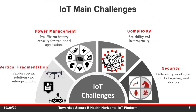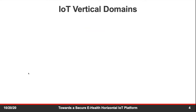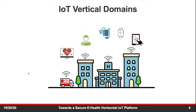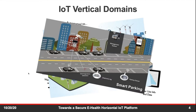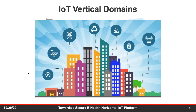I'm mainly focusing on the first challenge, which is vertical fragmentation. The IoT consists of many vertical domains — for example, eHealth is very different from smart metering, which is different from smart grid, smart parking, smart vehicles, smart transportation, and smart city. Each of these domains has its own requirements and its own way of connecting devices.